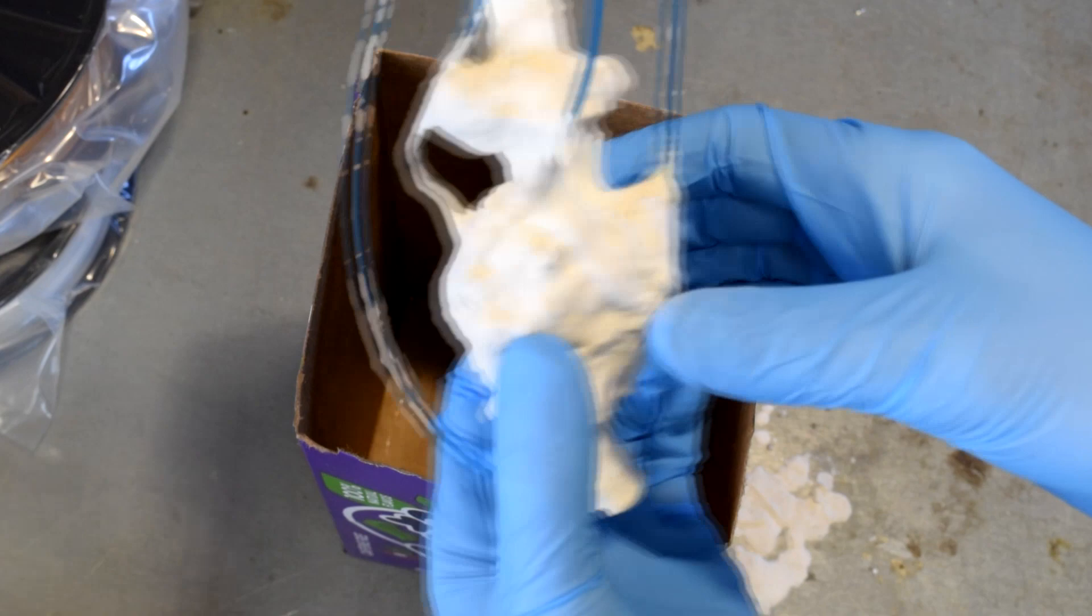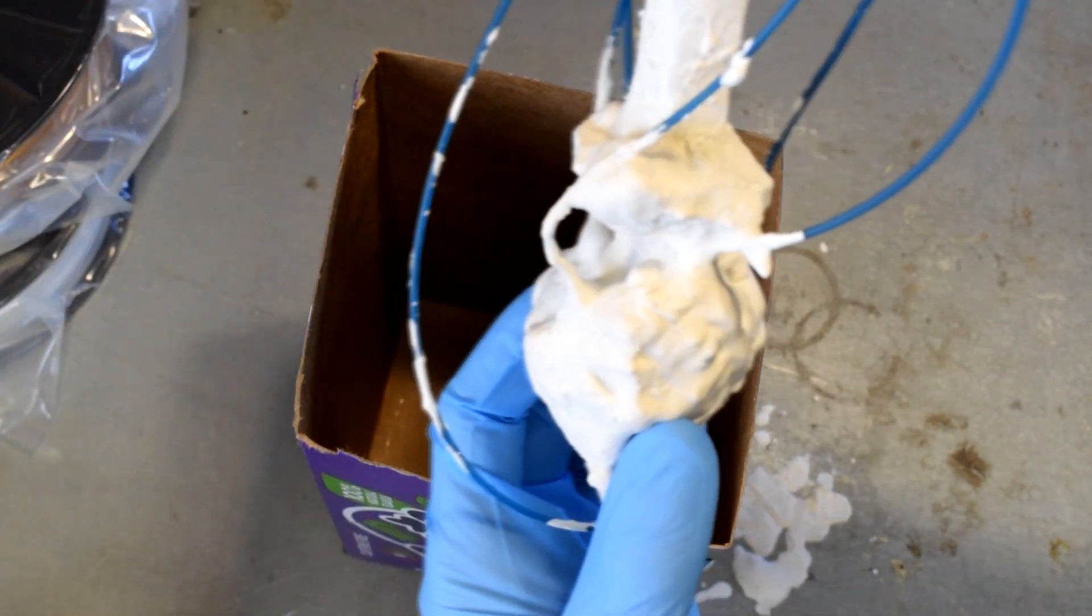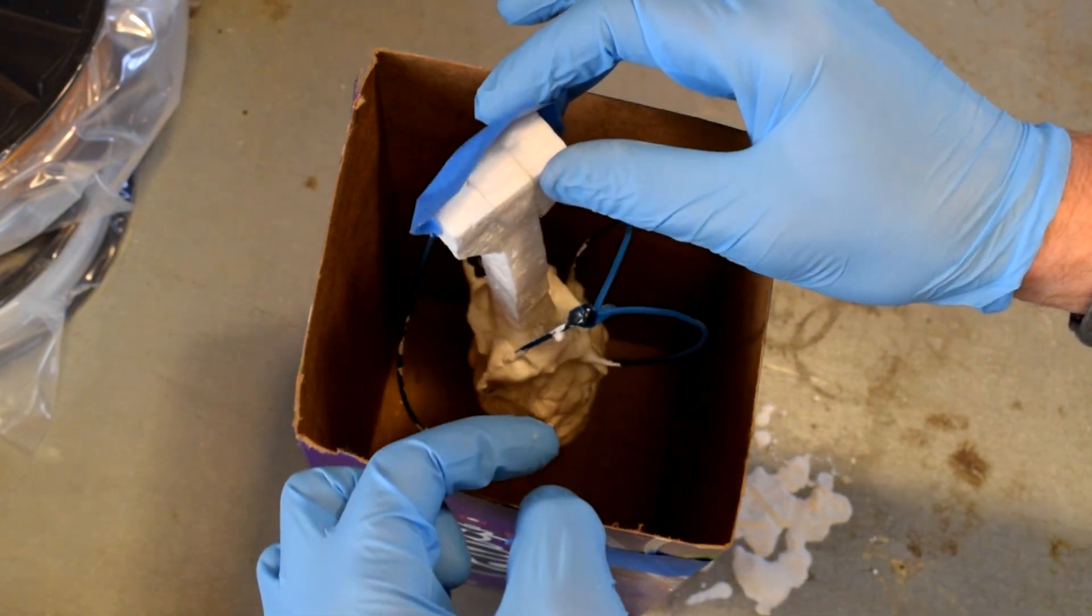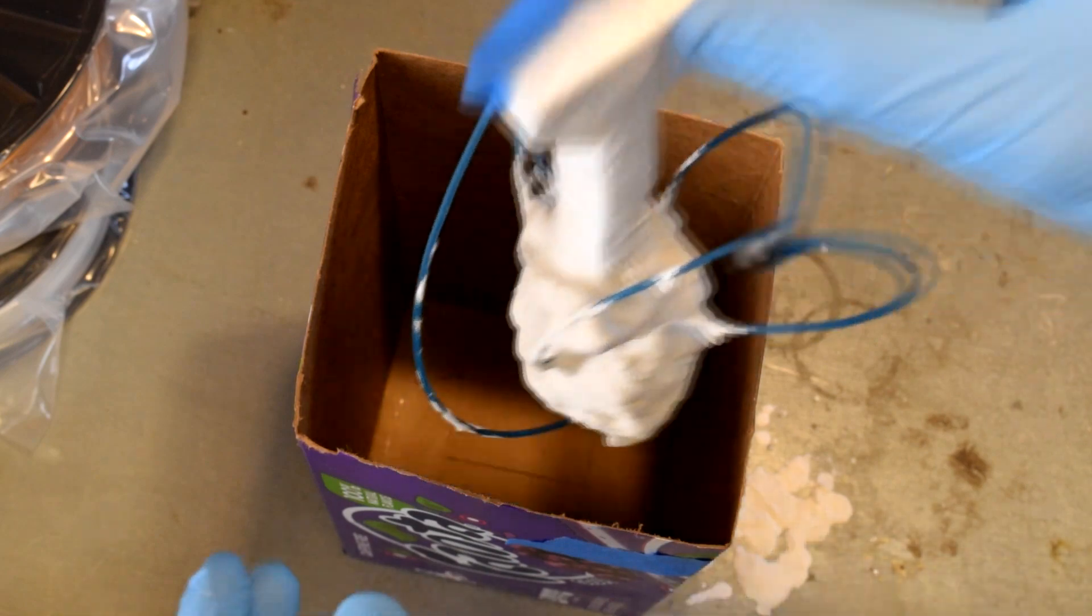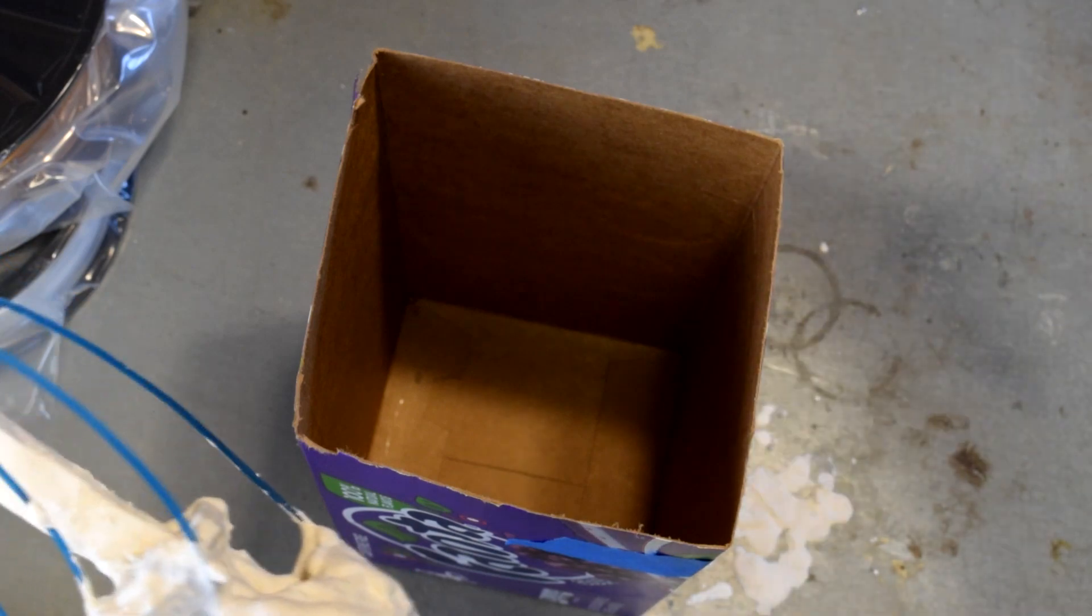Now comes the messy part. We got to mix up a bunch of plaster and sand and stick this in the box. I like to keep about an inch on each side because you will get cracking. If it cracks too much, you'll get a hole and it's not good.